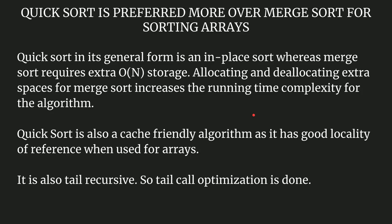Before jumping to the programming part, an important point: quicksort is preferred over merge sort for sorting arrays. Quicksort in its general form is an in-place sort, whereas merge sort requires extra O(n) storage where n is the array size. Allocating and deallocating extra space for merge sort increases the running time complexity. Quicksort is also a cache-friendly algorithm as it has good locality of reference when used for arrays. It is also tail recursive, so tail call optimization is applied in the case of quicksort.